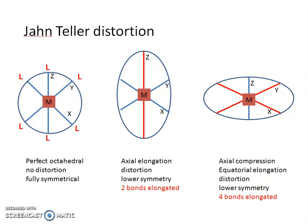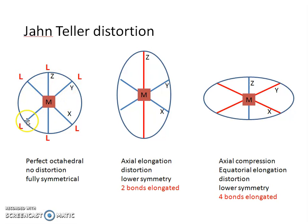There are two types of Jahn-Teller distortion. On the left hand side you can see a perfect octahedral without any distortion, which means the bond lengths between the metal and the donor atom of the ligand are equal in all directions — for all six ligand atoms those bond lengths are identical. So it is fully symmetrical.